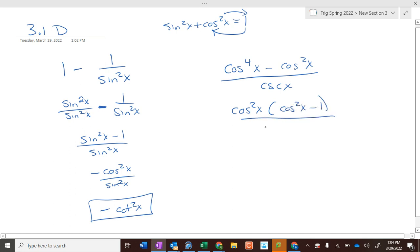And what is cosine squared of x minus 1 equal to? Sine squared, negative sine squared of x, right? So I have cosine squared of x times negative sine squared of x all over 1 over sine of x.